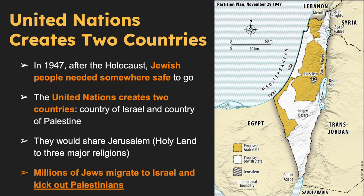UN Resolution 181 — Two Countries: The United Nations recommended that Palestinians and the Jewish people create two countries out of the Holy Land, where Jerusalem — the holy city for both religions — is located. One country would be called Palestine, the other Israel. The establishment of the State of Israel in 1948 marked a turning point, as millions of Jews from around the world emigrated to Israel.